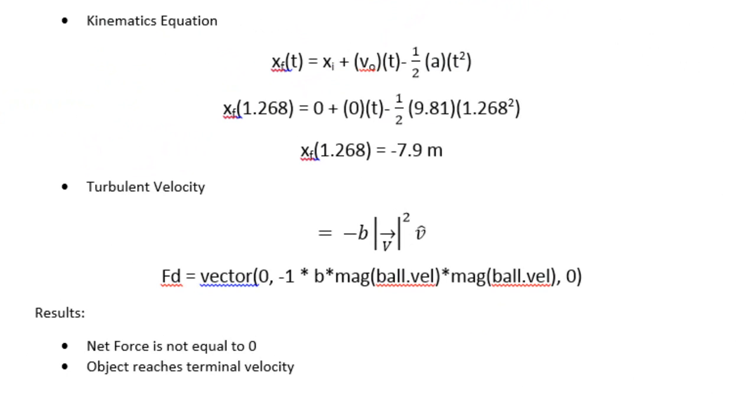Drag force is accounted for in the code by using the turbulent force equation containing the proportionality constant b and the ball's velocity squared. b was chosen by matching the model's final position with the observed motion's final position. This equation can be written like this in the code.